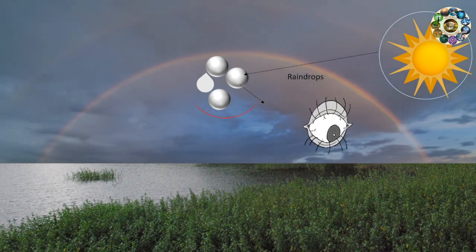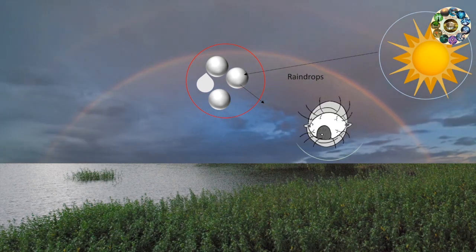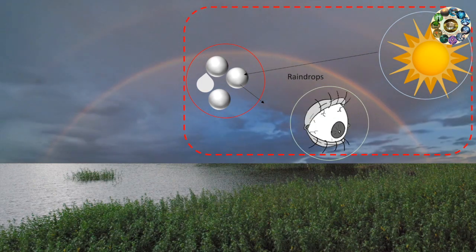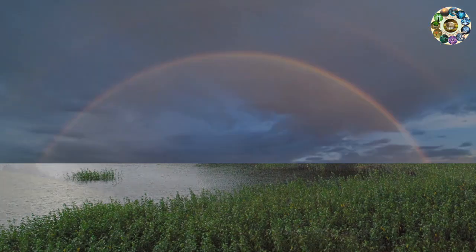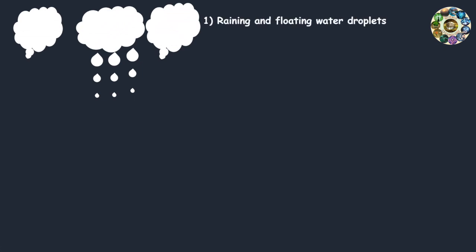The position of the sun and the raindrops in relation to the observer need to be just right for a rainbow to form. Three conditions must be fulfilled to see a rainbow. First, it must be raining because a rainbow requires water droplets to be floating in the air. That's why it is visible right after it rains.